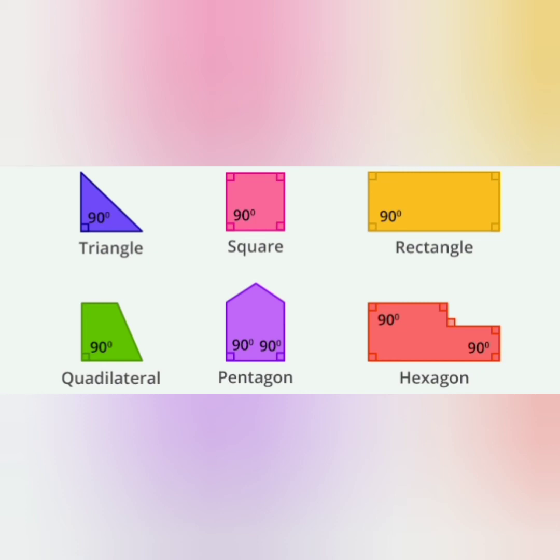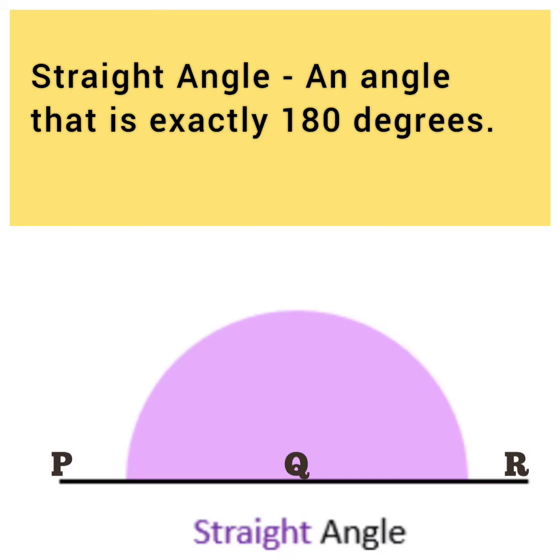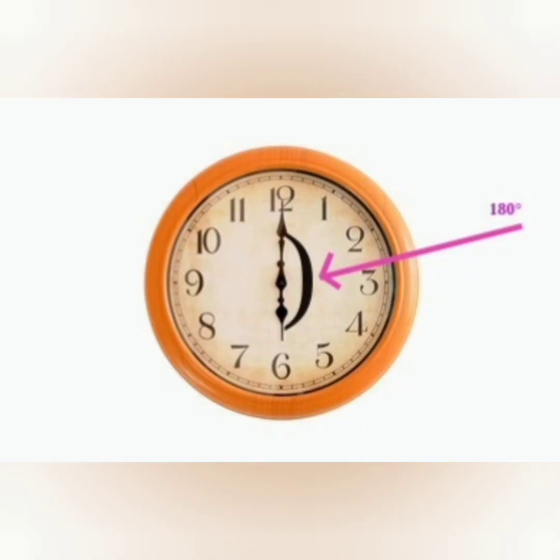Next is straight angle. An angle that is exactly 180 degrees is called a straight angle. Some examples of straight angles.